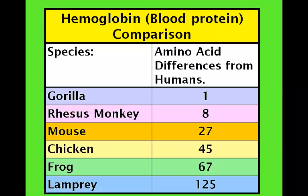This table is showing us one specific protein, hemoglobin, and this comparison is between humans and gorilla, humans and rhesus monkey, humans and mouse, and so forth. We can see that this particular protein, hemoglobin, is extremely similar to the human hemoglobin. There is only one amino acid difference in the whole protein.